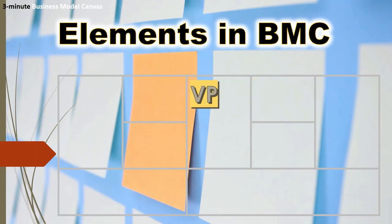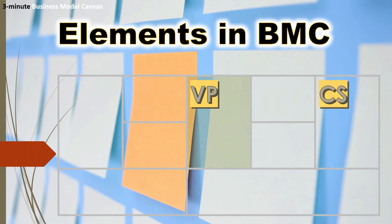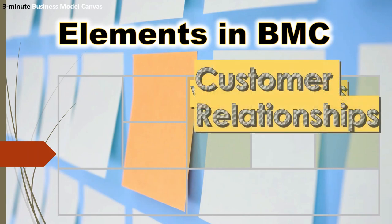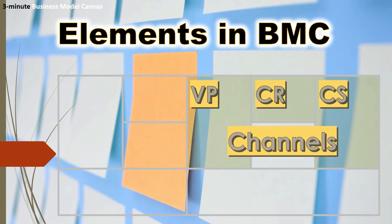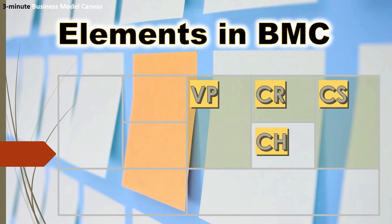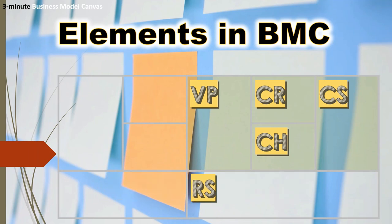In the front-end, we have the Value Propositions, which is what you sell or offer to your customers — we call it VP. Customer Segments is to whom you sell your value propositions — we call it CS. In between VP and CS, we have Customer Relationships, which communicate your VP to your customers. Then there are Channels — how you sell your value propositions — belonging to the element CH. The last element here is the Revenue Stream, or how you make your money, and we call it RS.